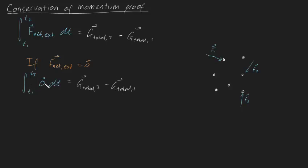Now let's evaluate this integral. We know the integral of zero is a constant, but when we evaluate it, it's going to be zero when we plug in the bounds. So it's going to be zero is going to be equal to our total change in momentum. G total two, minus G total one.